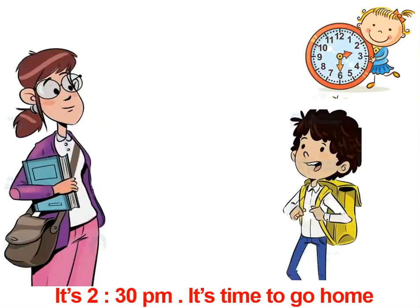Picture number two: الساعة هنا كام؟ It's two thirty. P.M. P.M. يعني مساء أو بعد الظهر. لكن A.M. كانت صباحا. It's two thirty P.M. — it's time to go home. ده وقت الذهاب للمنزل.